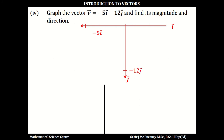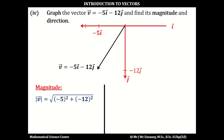In part 4, if we want to graph the vector minus 5i minus 12j, we move to the left minus 5, and then down to minus 12. To find the magnitude using Pythagoras' theorem, the magnitude of vector v is going to be the square root of minus 5 squared plus minus 12 squared. This works out as the square root of 25 plus 144, and this works out as the square root of 169, which is 13.